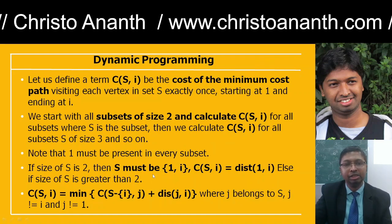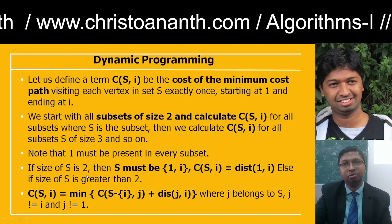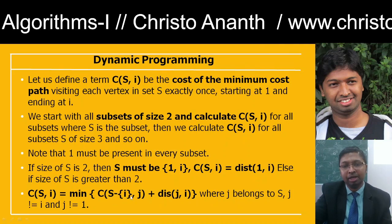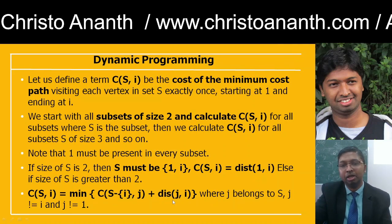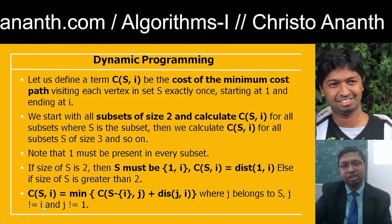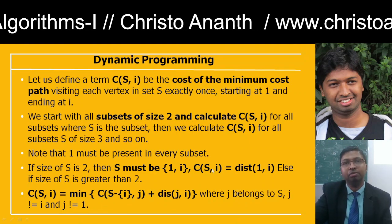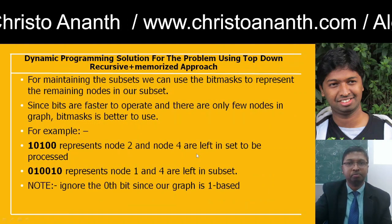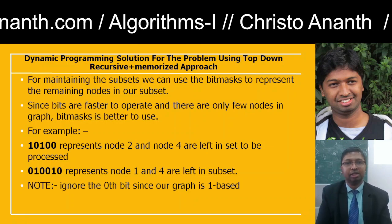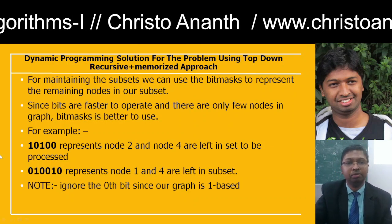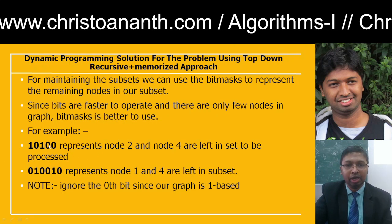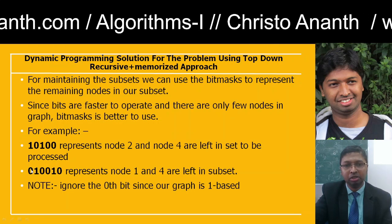For subsets of size 2, the subset should be {1, i} and cost(S, i) = distance(1, i). If the size of S is greater than 2, then cost(S, i) = min over j in S [cost(S − {i}, j) + distance(j, i)], where j ≠ i and j ≠ 1. For the bitmask representation, for example 1010000 represents nodes 2 and 4. This is how we track the remaining nodes in the subset using bitmasks.